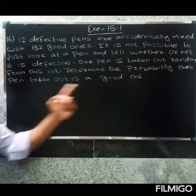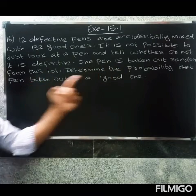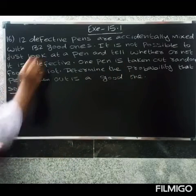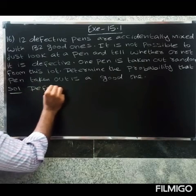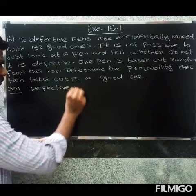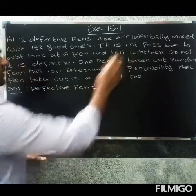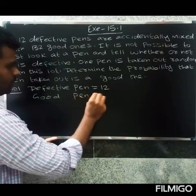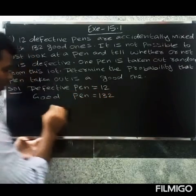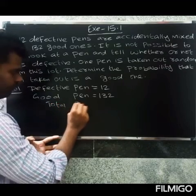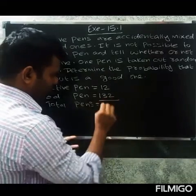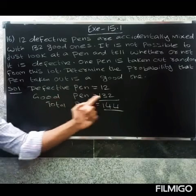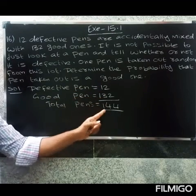Determine the probability that the pen taken out is a good one. The number of defective pens is 12, the number of good pens is 132, so the total number of pens is 144.